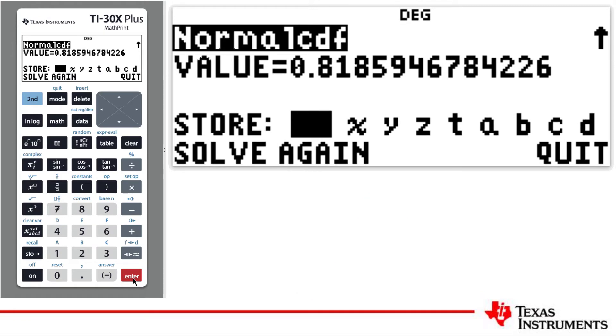The result is 0.8185. This is our reduced sample space. I am going to store this result in B.